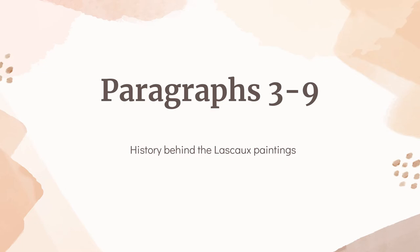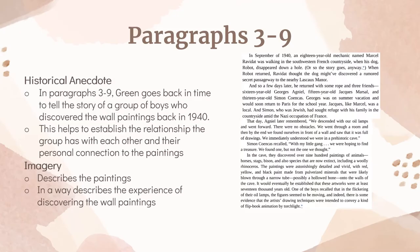Paragraphs 3 to 9 provide the history behind the paintings. Green uses historical anecdotes and imagery in this section. He goes back in time to tell the story of the group of boys who discovered the paintings, establishing the relationship they had with the paintings. He also uses imagery to describe the paintings as detailed and vivid, with red, yellow, and black, as well as many different animals depicted. This combination creates a sense of reliving the discovery, making the audience feel in the moment and creating a relationship between them and the art.